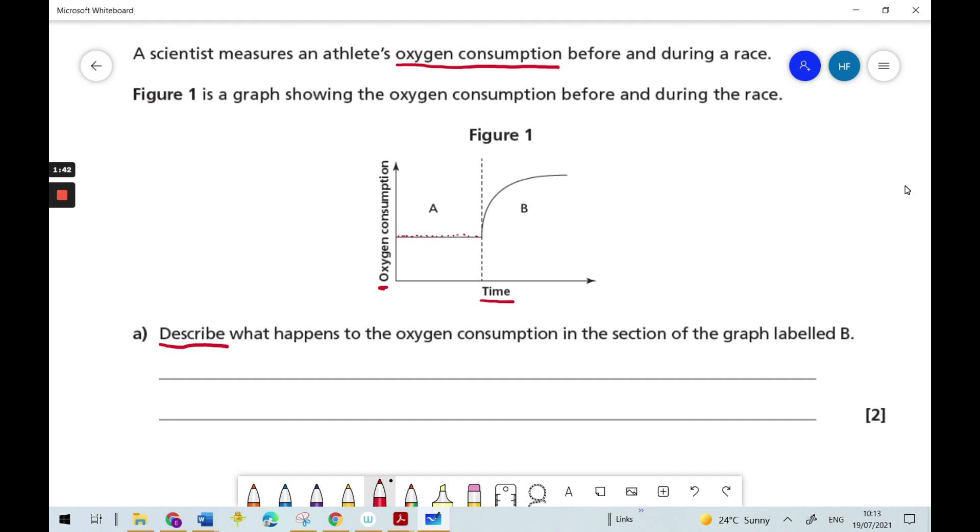So it's before the race. Whereas in part B, we can see the line suddenly increases and then it begins to level off. So this part of the graph is likely to be showing us the athlete's oxygen consumption during the race. Now we need to put a description into words for part B. Let's think of what sort of words we can use.